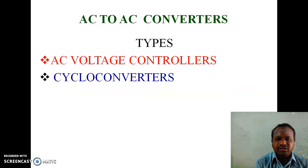AC to AC Converter means the input is AC and the output is also AC. There are two types of AC to AC converters: first, AC voltage controller, and the second, cyclo-converters.